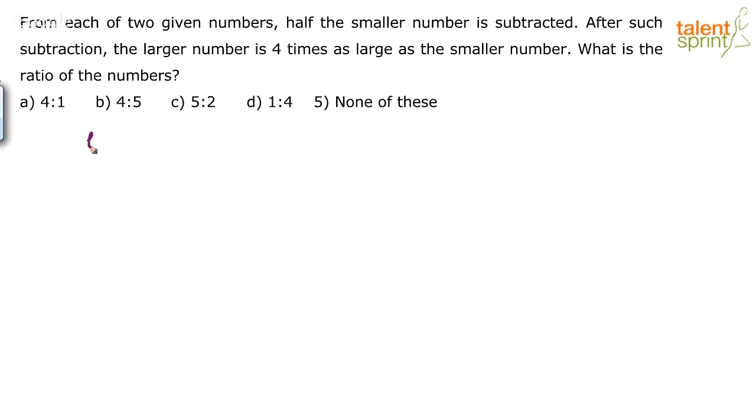Let us assume the two numbers are L and S, larger number and smaller number. It says from each of the two given numbers, half of the smaller number is subtracted. So from L, we will subtract half of smaller number, S by 2. And from S also, we will subtract half of the smaller number, which is S by 2.